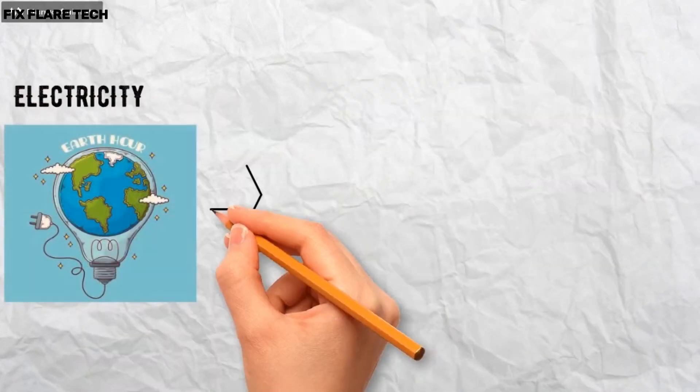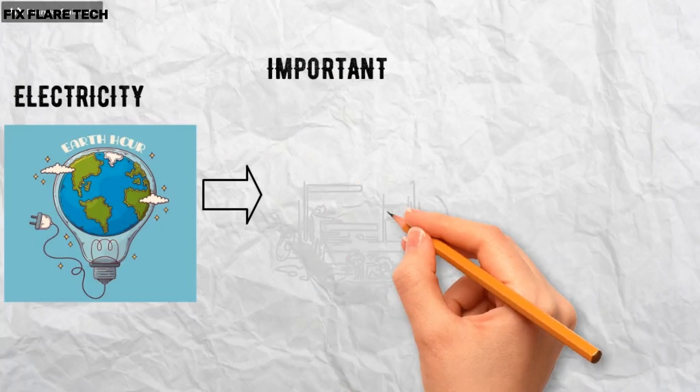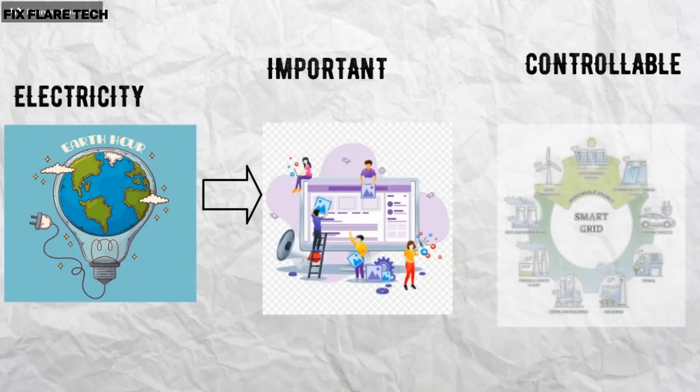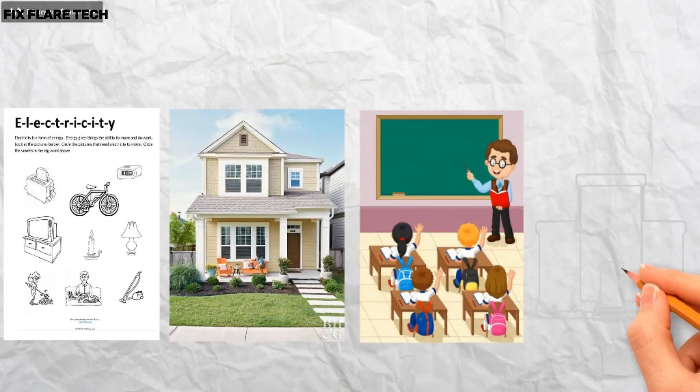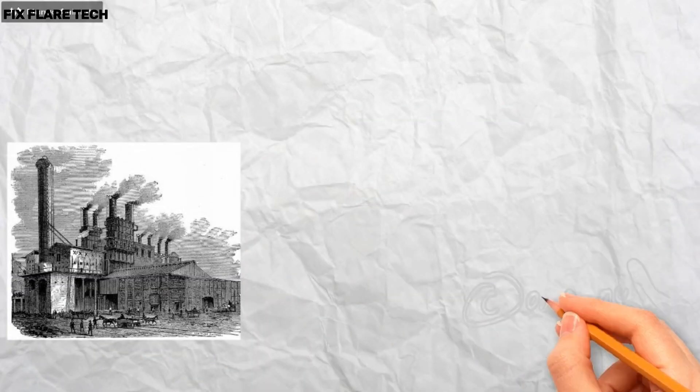Electricity has an important place in modern society. It is a controllable and convenient form of energy for a variety of uses in homes, schools, hospitals, industries, and so on.